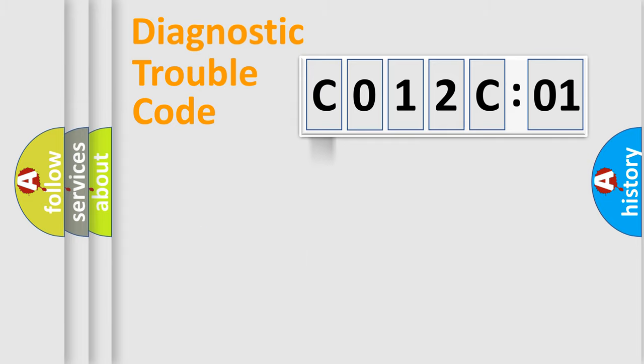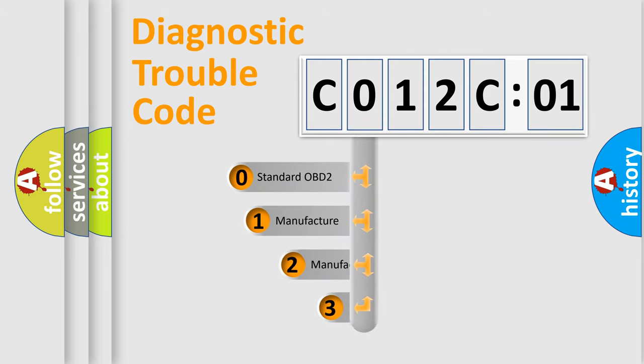Powertrain, Body, Chassis, Network. This distribution is defined in the first character code.